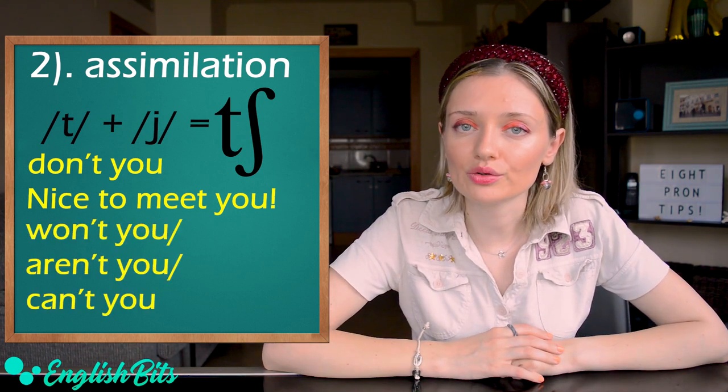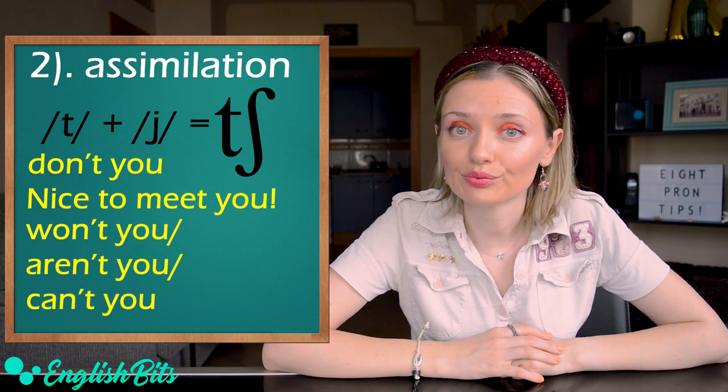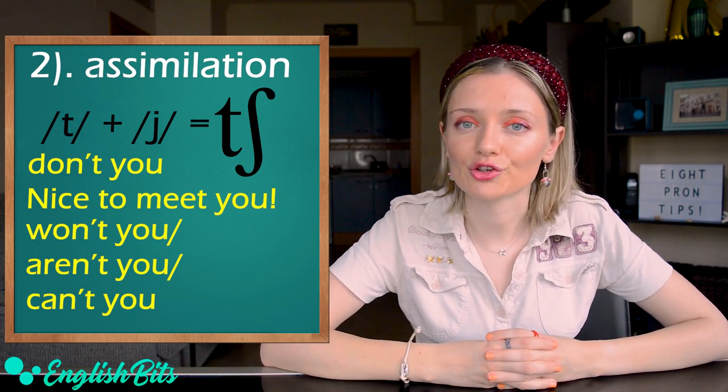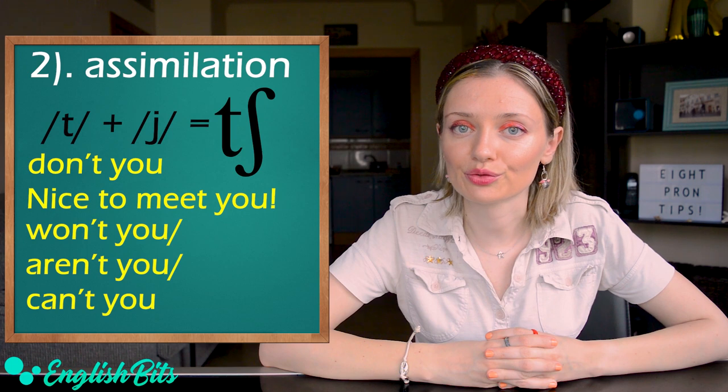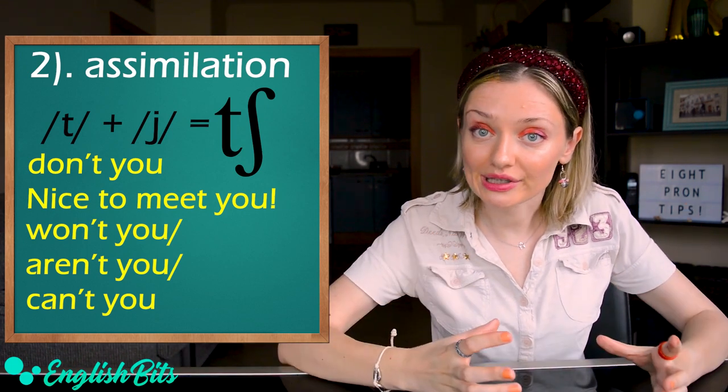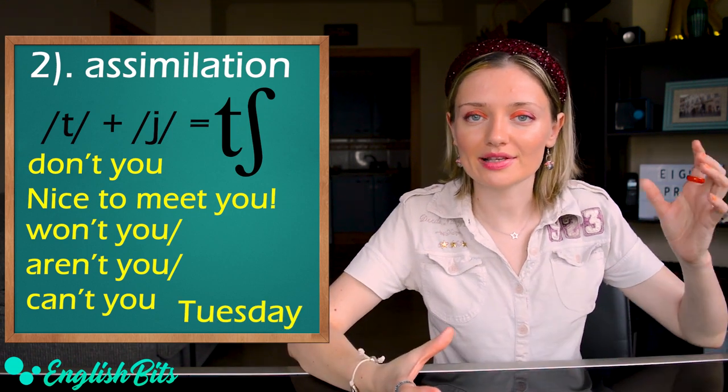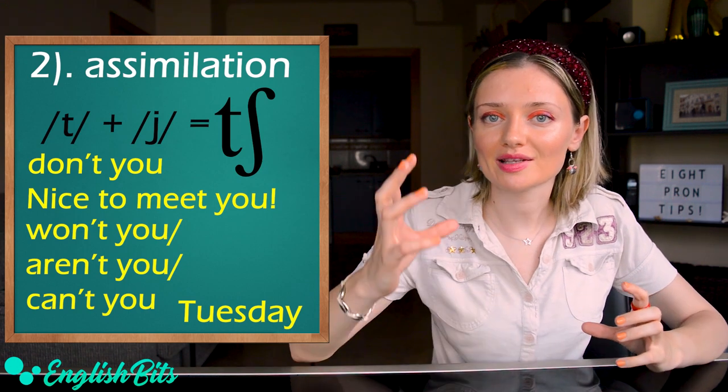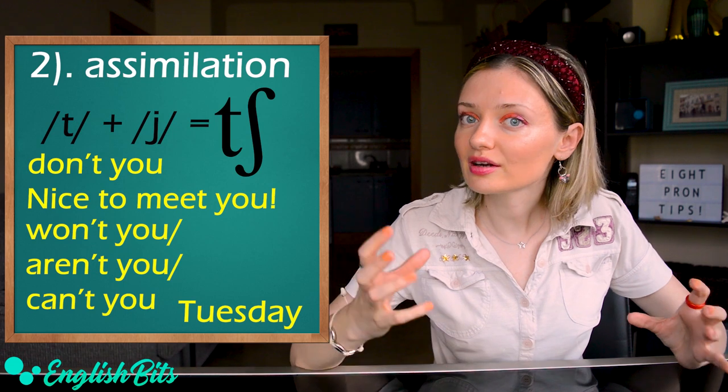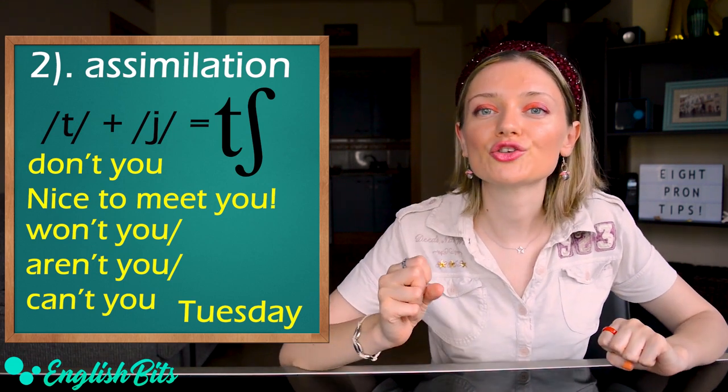More examples. Won't you. Or aren't you. Or one more example. Can't you. And assimilation can also happen inside the same word. For example, Tuesday. We have the sound T followed by the sound Y. So it's pronounced like Tuesday. So it's not Tuesday, but Tuesday.